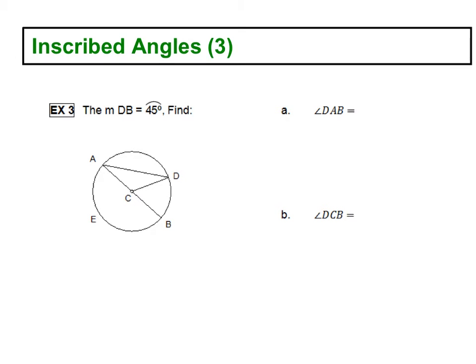I have a little bit of a typo. I'm not sure if this is what it looks like in your packet. The arc symbol should be over DB right here. The measure of arc DB - that's not even a very good arc symbol. That's a little bit better. It shouldn't be over the 45. So the measure of arc DB, here's DB, is 45 degrees.